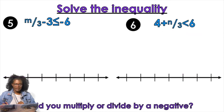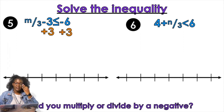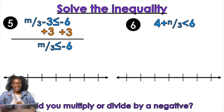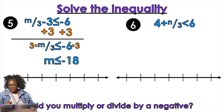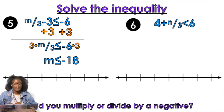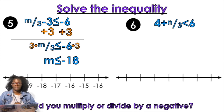Now we have m/3 - 3 ≤ -6. I'm going to start by moving my constant — adding 3 to both sides. Then I need to get rid of the coefficient, which is technically one-third, so I multiply by 3, because multiplication cancels out division. So m ≤ -18. Did I flip my symbol? No, because I did not multiply or divide by a negative on both sides — it has to be both sides. Open circle or closed circle? Closed. Left or right? Left, because less than is left — that's how I make my students memorize it.